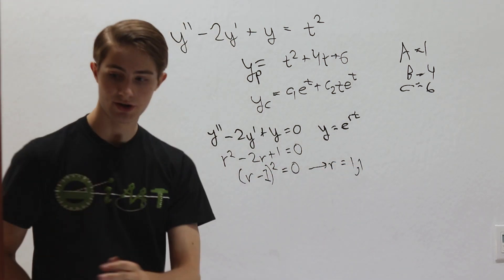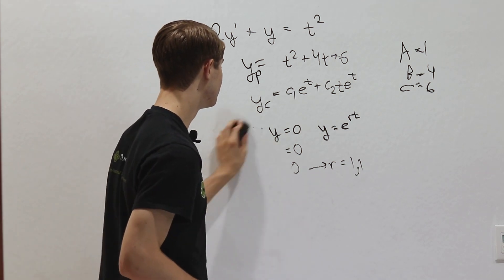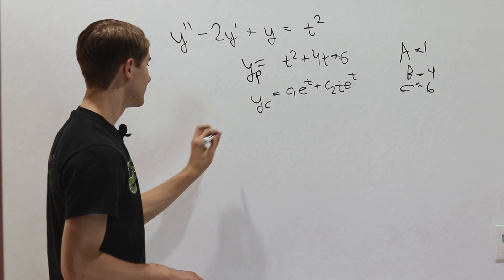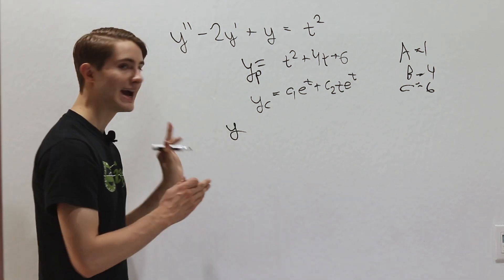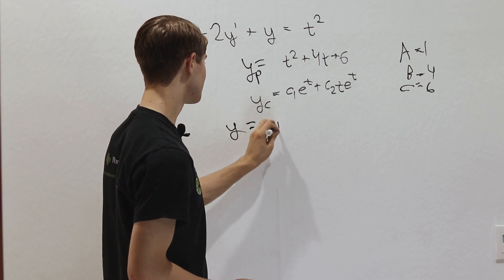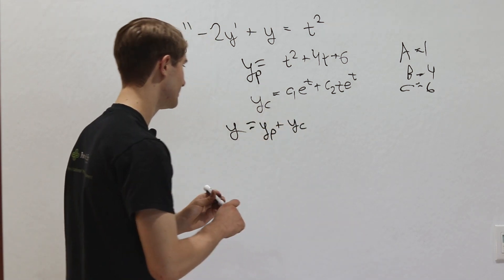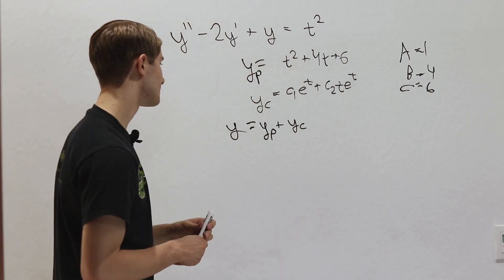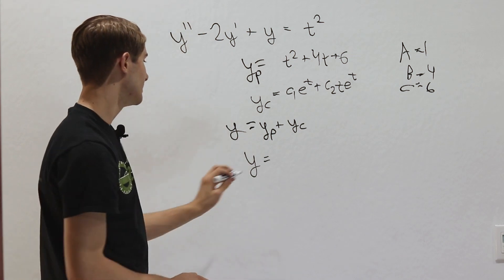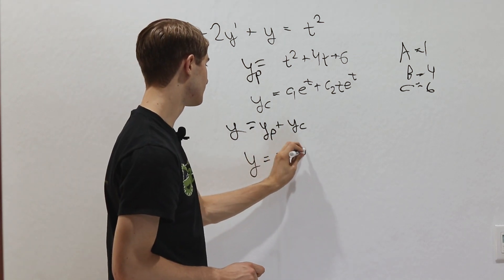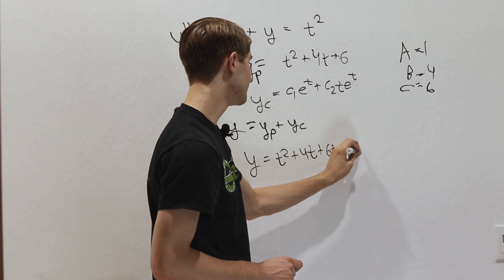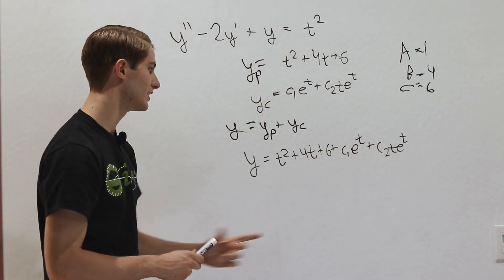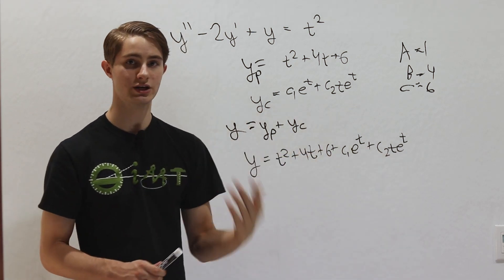Now we have two components of the full solution. The final solution y is the particular solution plus the complementary solution. Adding t squared plus 4t plus 6 and then 0 still gives t squared, so our final answer is y equals t squared plus 4t plus 6 plus c1 e to the t plus c2 t e to the t, with our two arbitrary constants.